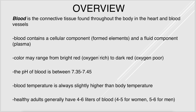Starting with blood, blood is a connective tissue. Obviously it's found in the heart and in blood vessels — those are really the only places it should be found. There are two main components to blood: the formed elements, which is considered the cellular component because it contains either cells or fragments of cells in the case of platelets, and also plasma, which is the fluid component.